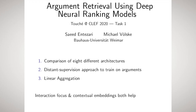Our results show a rather poor overall performance of general purpose neural rankers. However, an interaction-focused ranking strategy as well as incorporating contextual embeddings both tend to improve argument ranking quality.